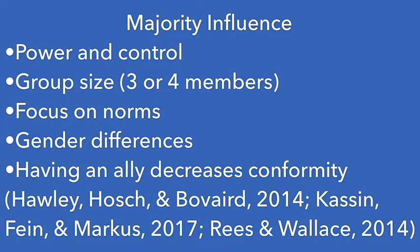Casson, Fine, and Marcus described how majorities have influence because of power, control, and sheer number of members. Conformity due to majority influence increases as the number of group members increases, but only up to about three or four members — after that, there is no significant increase. Social norms can also encourage conformity, but only when these norms are known and attended to. Research has shown gender differences in conformity, with women conforming more in face-to-face interactions and men conforming more in private.